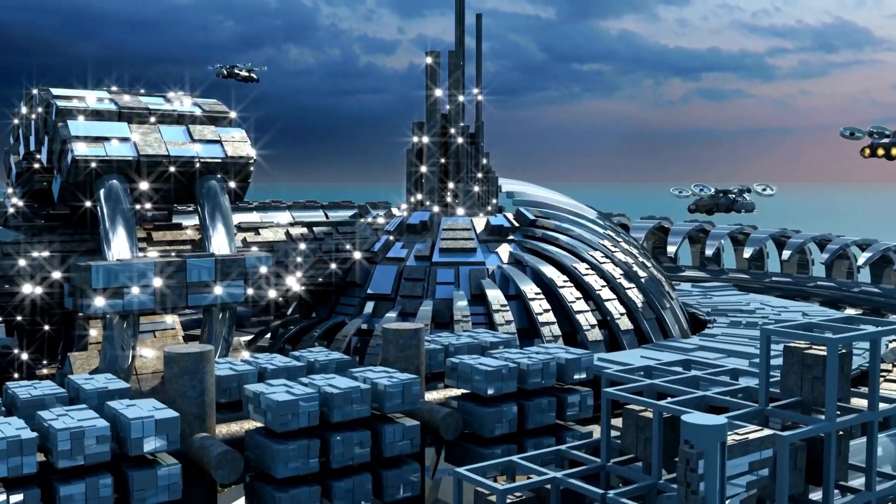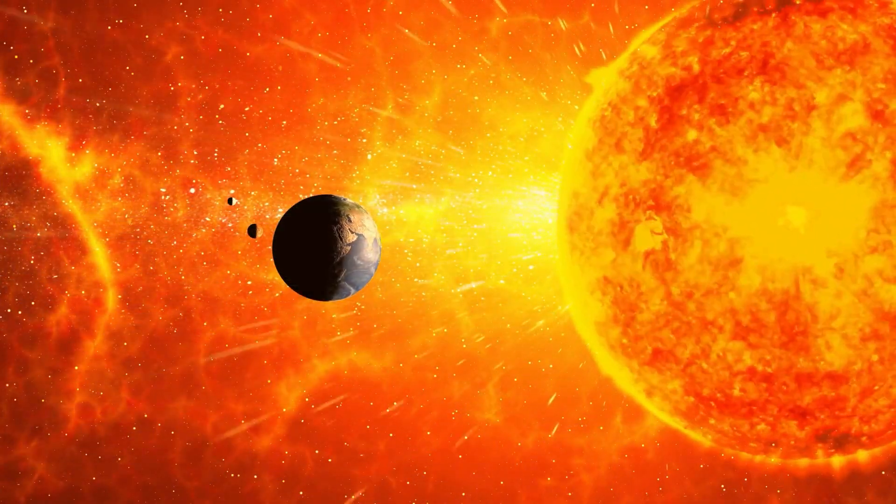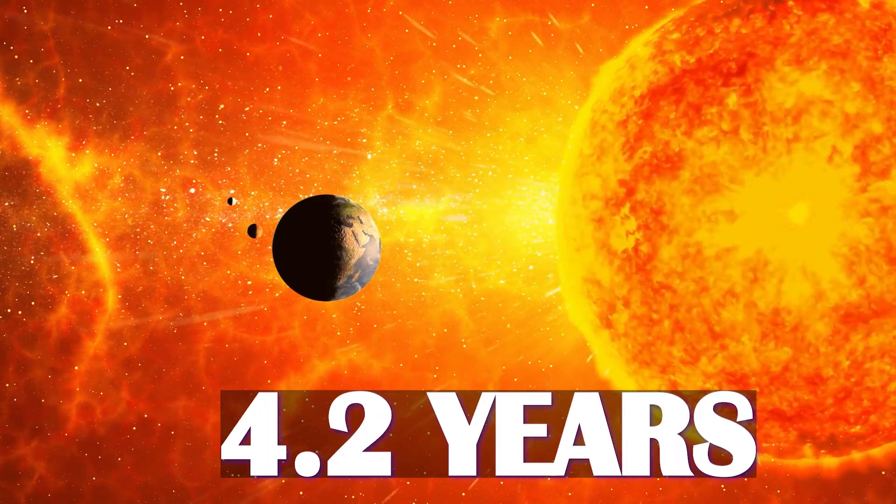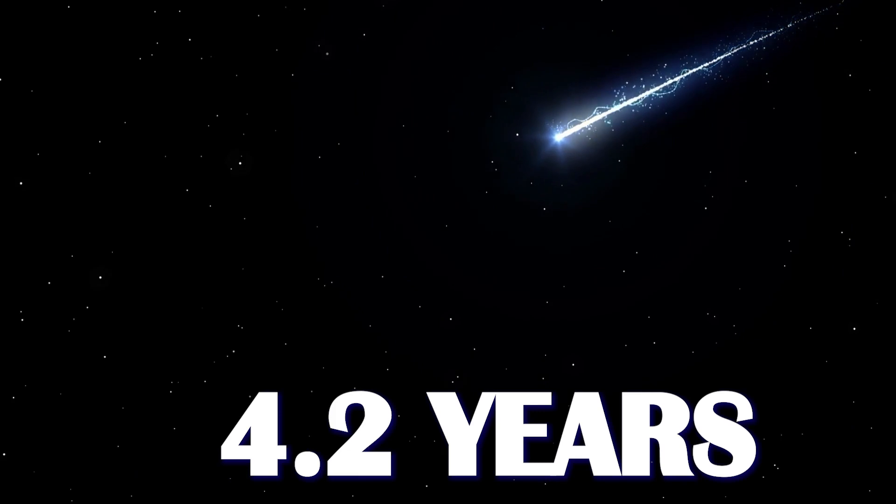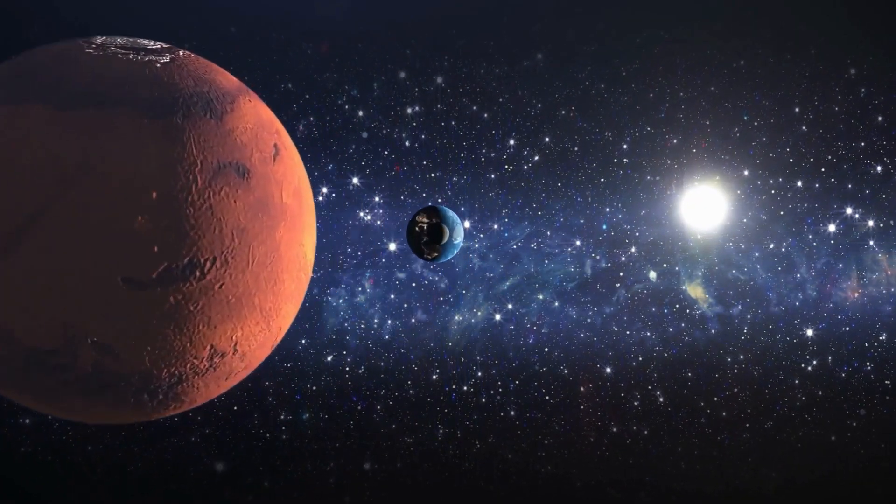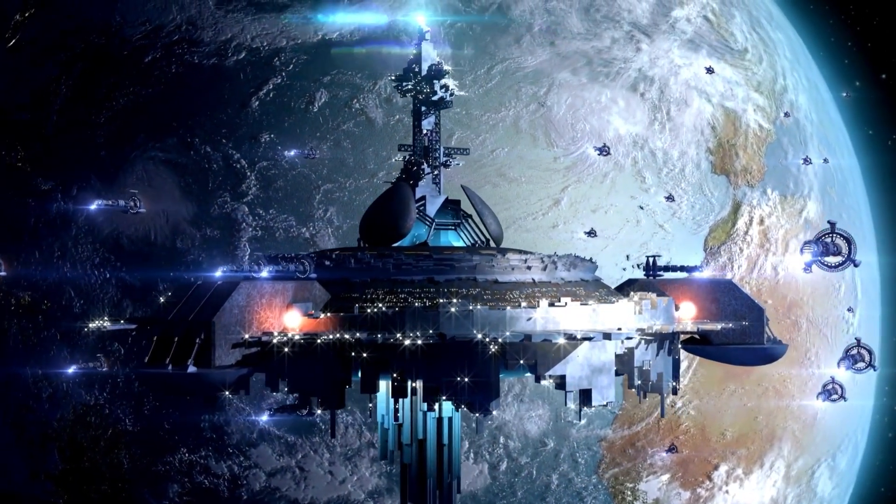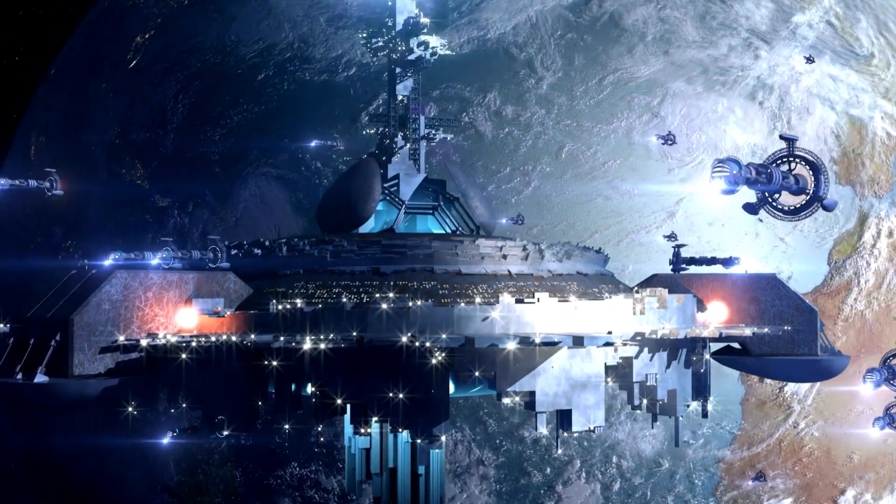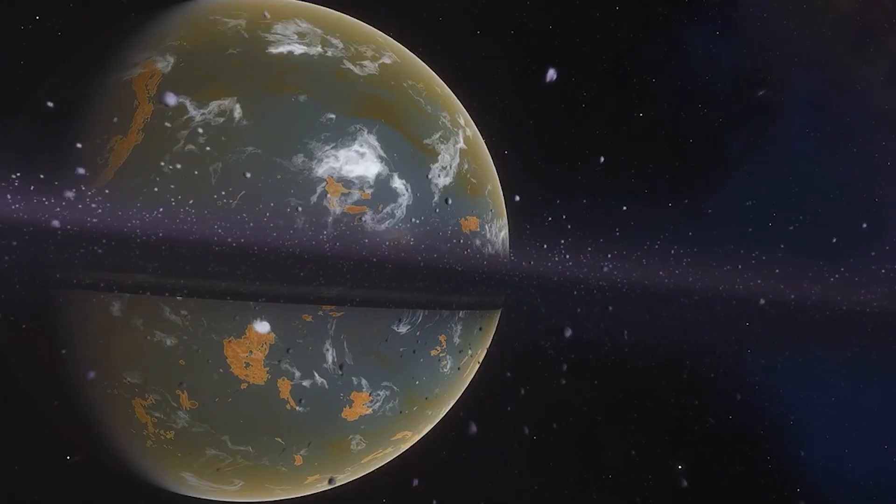Imagine if we had a colony on the closest exoplanet to Earth, Proxima Centauri, and they radioed us. It would take 4.2 years for their message to reach us, and another 4.2 years for our reply to reach them. That's a total of 8.5 years to have a conversation with them. It's difficult to imagine what kind of conversation we could have with such a lengthy time gap. And this is just from a neighboring system.